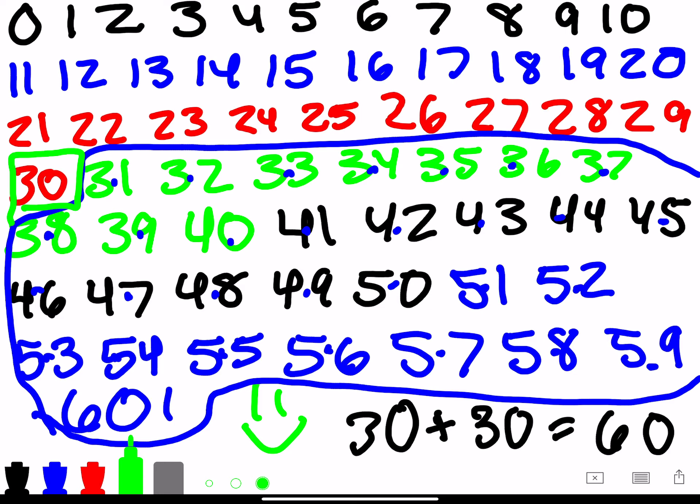Continuing: 31, 32, 33, 34, 35, 36, 37, 38, 39, 40, 41, 42, 43, 44, 45, 46, 47, 48, 49, 50, 51, 52, 53, 54, 55, 56, 57, 58, 59, 60.